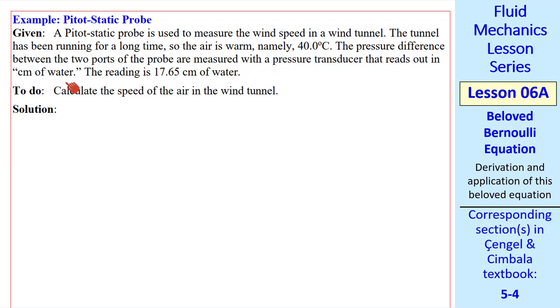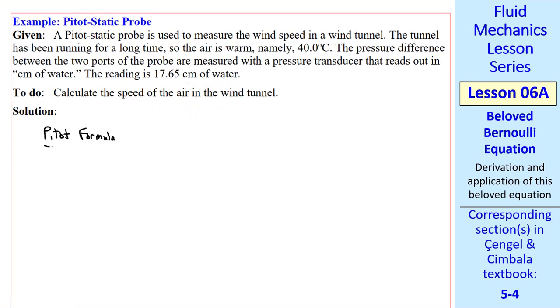It's not unusual to have pressure transducers that have these units. And our reading is 17.65 centimeters of water. What's the speed of the air in the wind tunnel? I'll use the pitot formula we just derived. V equals the square root of 2ΔP over ρ. Be very careful here.